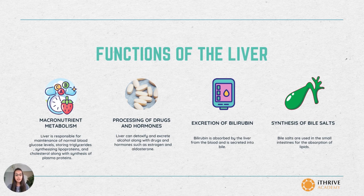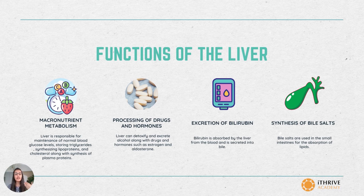The next function associated with the liver is the processing of drugs and hormones in the body. The liver can detoxify substances such as alcohol and also excrete certain drugs into bile. It can also chemically alter or excrete certain hormones like estrogen and aldosterone.